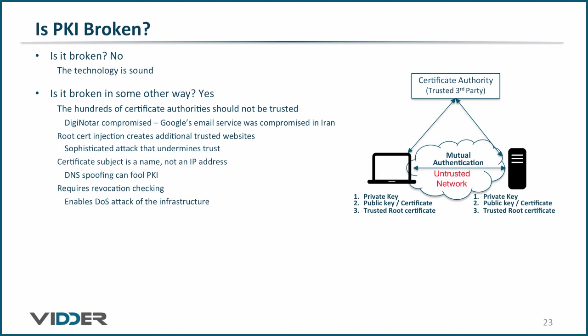Previously, we talked about how the installation of a browser downloads hundreds of trusted root certificates. Any compromise in the chain of certificates to the root means a compromise of PKI. That's what happened to Google when Iranian hackers compromised DigiNotar's issuing CA and issued certificates to the hackers that cryptographically proved they represented Google. Similarly, there's an attack known as a root cert injection attack, resulting in the victim's computer trusting the attacker for all certificates presented to the victim. In addition, for servers on the internet, the subject's common name in the server certificate is a name, not an IP address — therefore DNS spoofing can enable man-in-the-middle attacks. Finally, the fact that PKI enables revocation checking also opens up a denial of service attack by flooding the OCSP responders with requests, effectively shutting down servers using that PKI infrastructure.